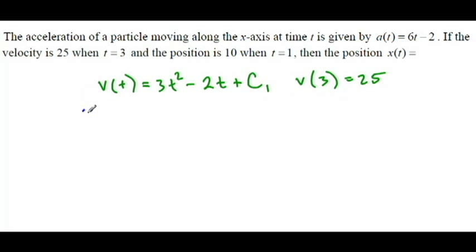If I plug 25 into my velocity and 3 into t, 3² is 9 times 3 is 27 minus 2 times 3, that's minus 6 plus c₁. And this, of course, yields that c₁ is equal to, let's see,